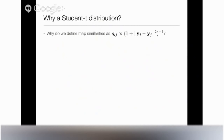One thing I didn't answer yet: when computing Q_ij, I wasn't using a Gaussian kernel — the e to the power of minus one-half times the squared distance — but instead something else: a Student t-distribution with one degree of freedom, which is a distribution much more heavy-tailed than the Gaussian.